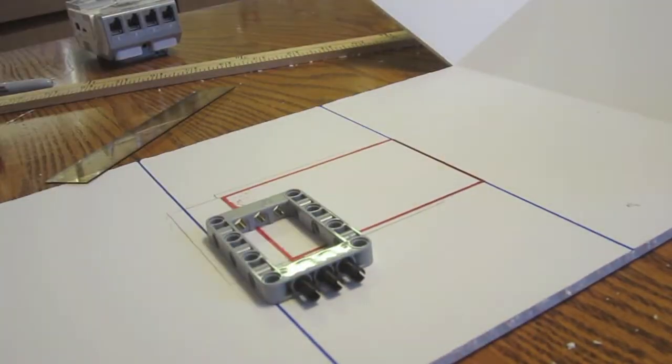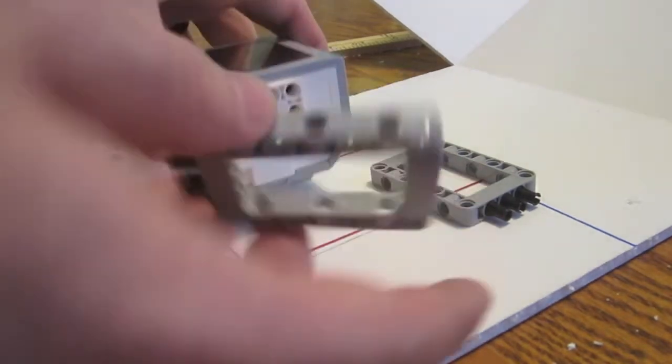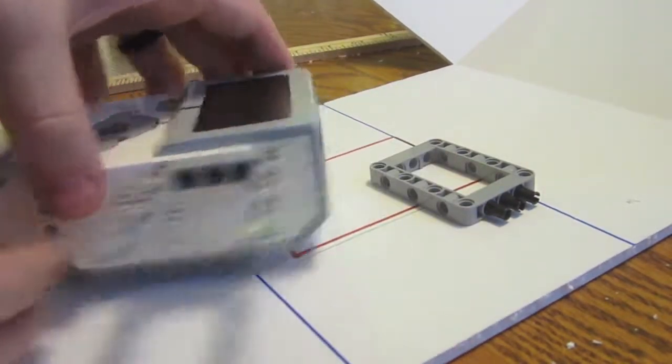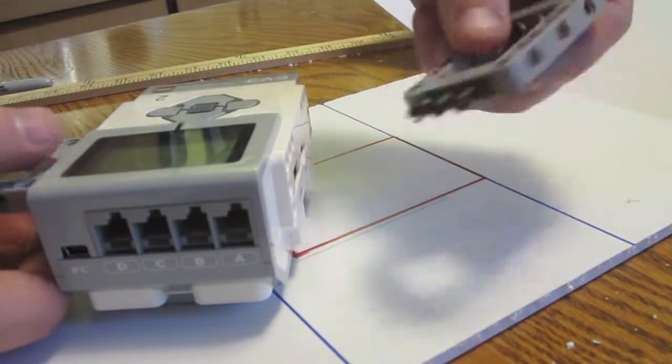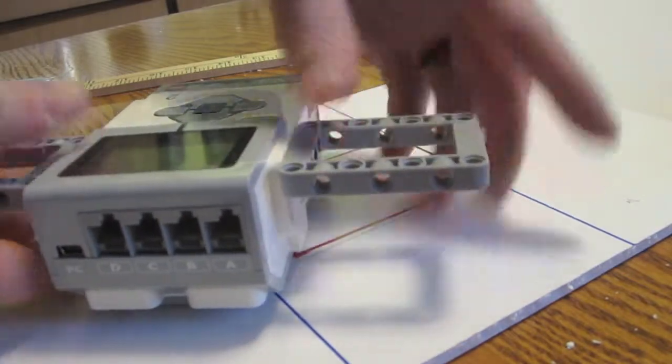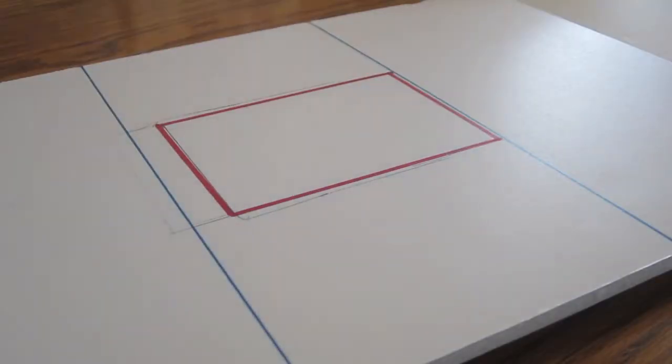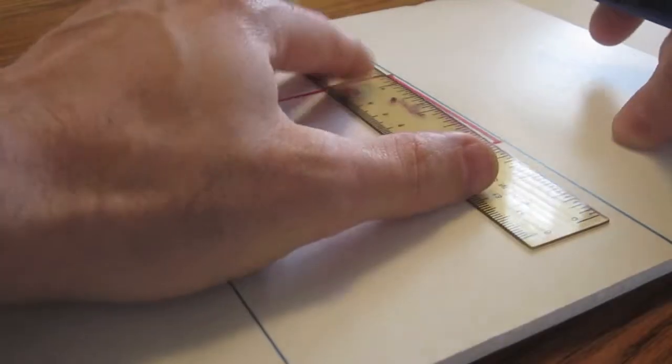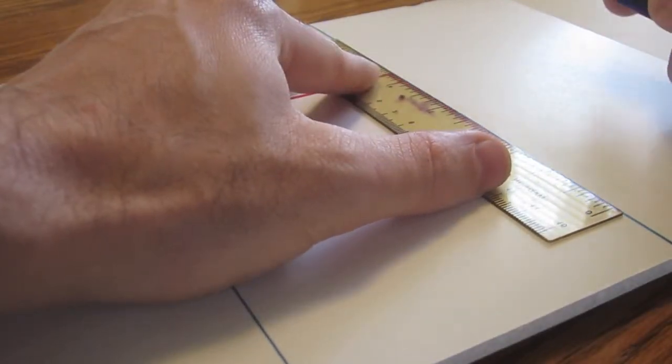So I've got this here, this set here. These guys are going to connect right there and right there. So we're just going to go ahead and cut out the area where the EV3 is going to be visible. I'm going to use the ruler to maintain a nice straight edge.